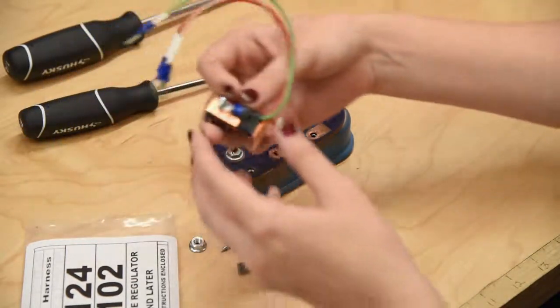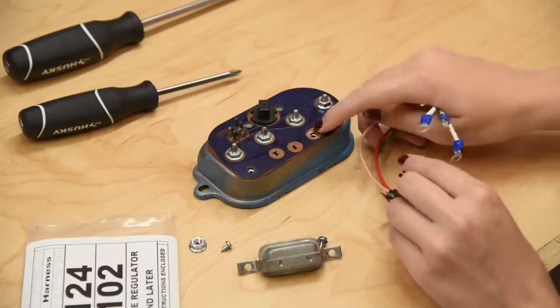You remove the old regulator and replace it with the new one over the ground plate.